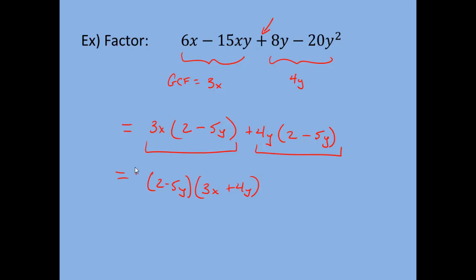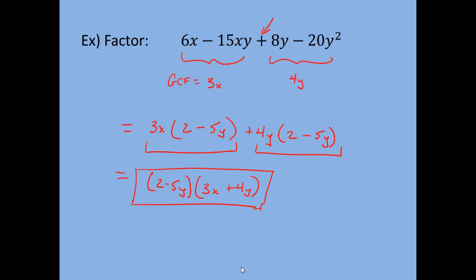You need those parentheses because they signify that you're multiplying. So the final factored form is (2 − 5y)(3x + 4y) — and you're done. To check this, remember you can always distribute through by FOILing and make sure you get the original expression. Here's one for you to try on your own.